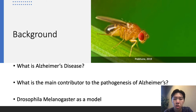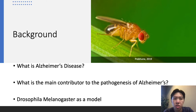We chose Drosophila melanogaster as our model due to their quick reproduction rate as well as simple genetic structure that allows us to see these peptides and document them, which we'll be seeing later on in this presentation.